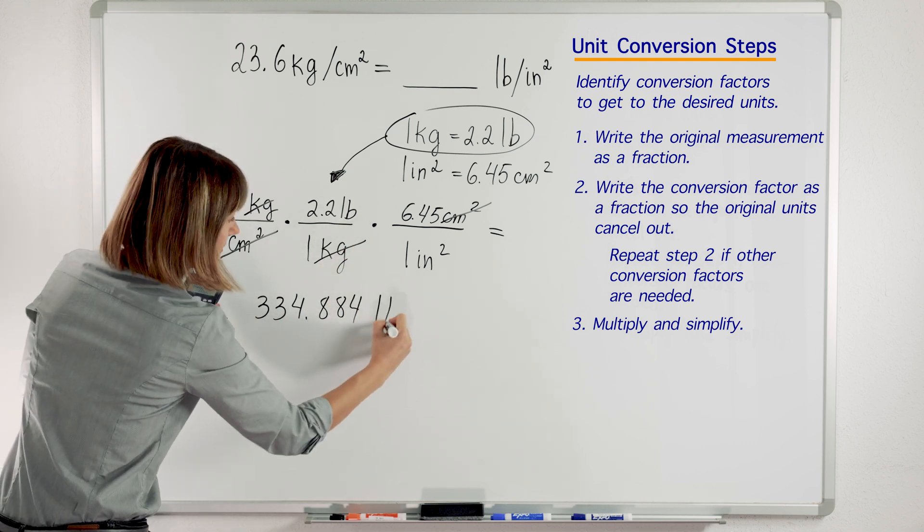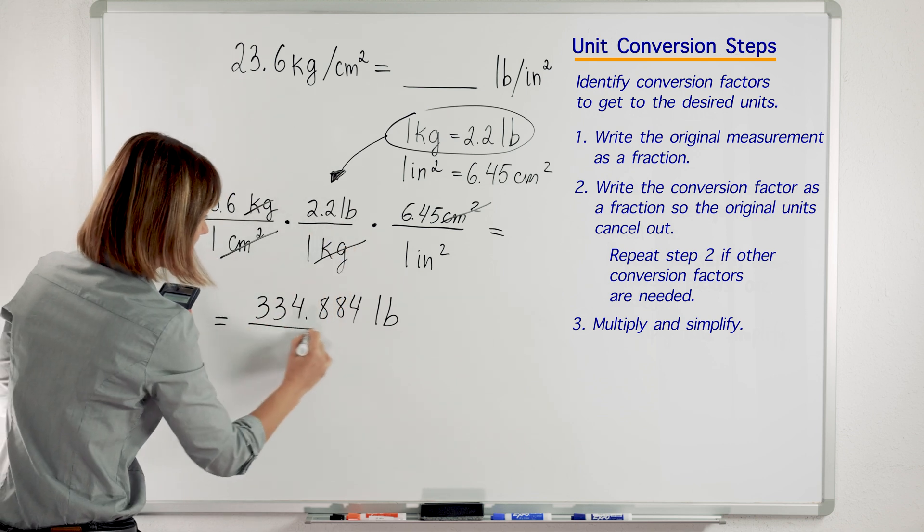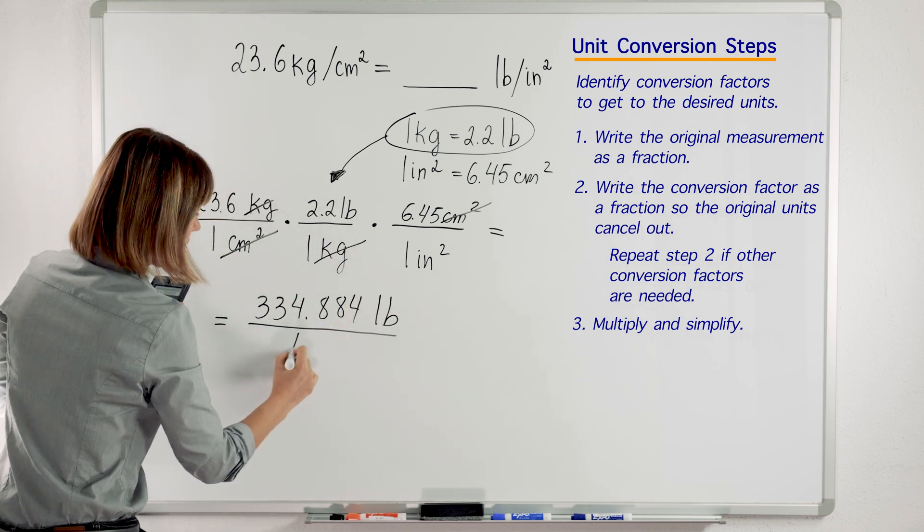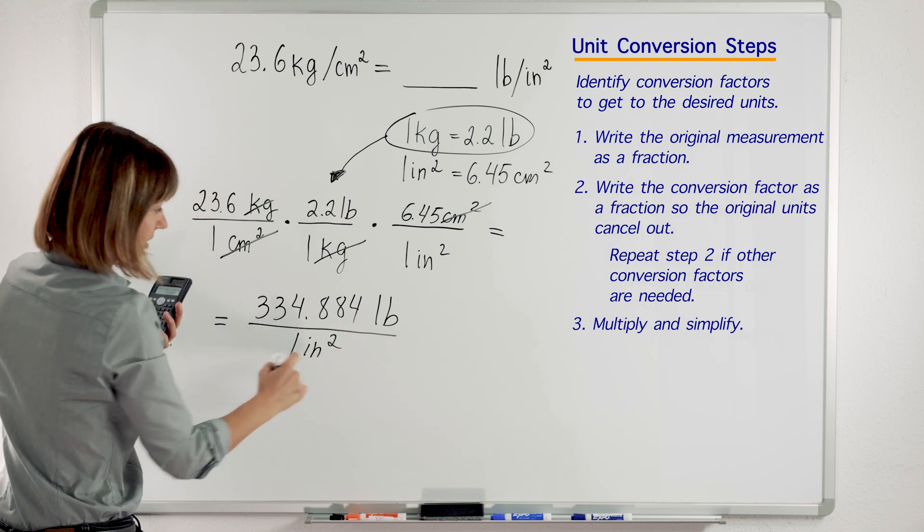334.884. What do we have? Pounds, right? Remember the units. Over 1 times 1 times 1 over 1 inch squared.